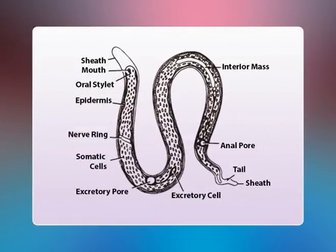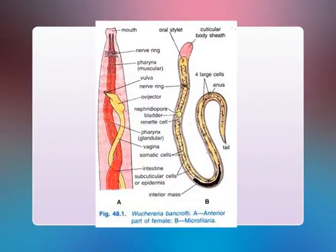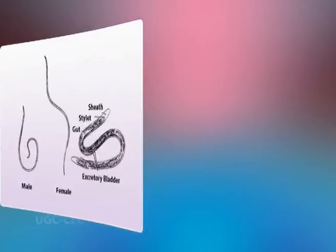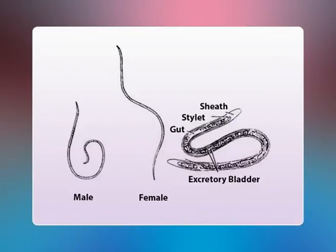The adults of Wuchereria bancrofti are long, thread-like, creamy white worms. The head is slightly swollen and has two rows of 10 sessile papillae. The cuticle is smooth with fine transverse striations. The posterior end of the female is finely tuberculated. The female measures about 80 to 100 µm × 0.25 µm, while the male measures about 40 × 0.25 µm. The tail end of the male is curved ventrally and contains two spicules of unequal length. The females are ovo-viviparous, laying eggs with well-developed embryos. Males and females remain coiled together, and the adult worms live for 10 to 15 years or more.